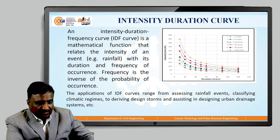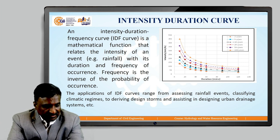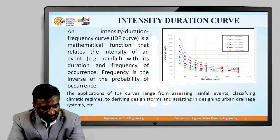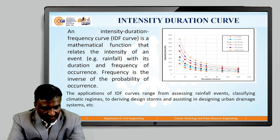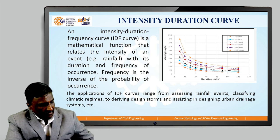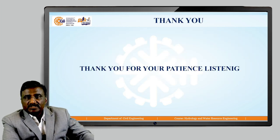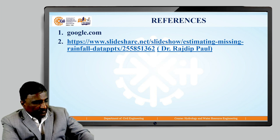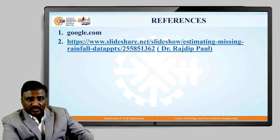The next topic is the intensity-duration-frequency (IDF) curve. An IDF curve is a mathematical function that relates the intensity of a rainfall event with its duration and frequency of occurrence, where frequency is the inverse of the probability of occurrence. Applications of IDF curves range from assessing rainfall events, classifying climatic regimes, deriving design storms, and assisting in designing urban drainage. Thanks for watching, and these are the references used for preparing this presentation.